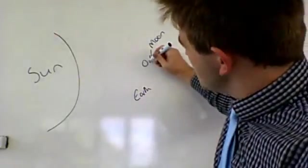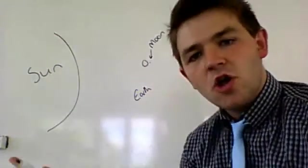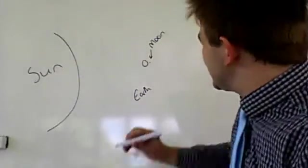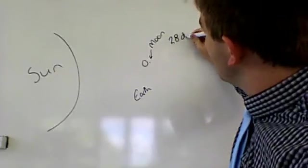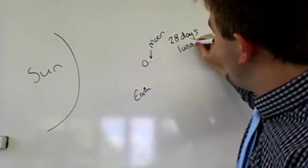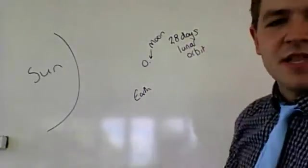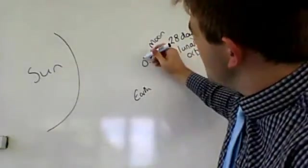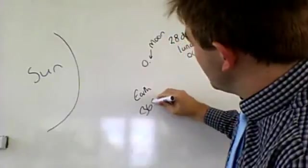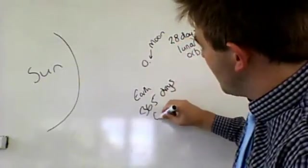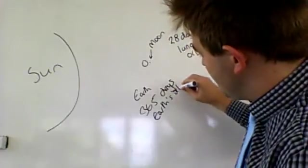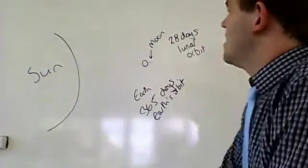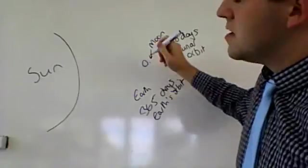The moon also does the same orbit when it goes around the object. The moon, it takes about 28 days for what we call the lunar orbit. So the time it takes the moon to go around the Earth. Earth's orbit is about 365 days as I said before.